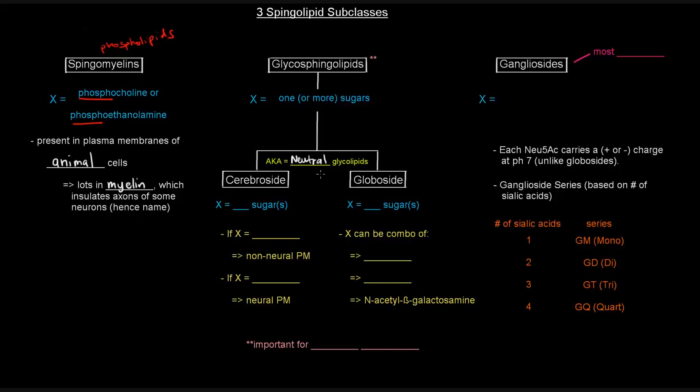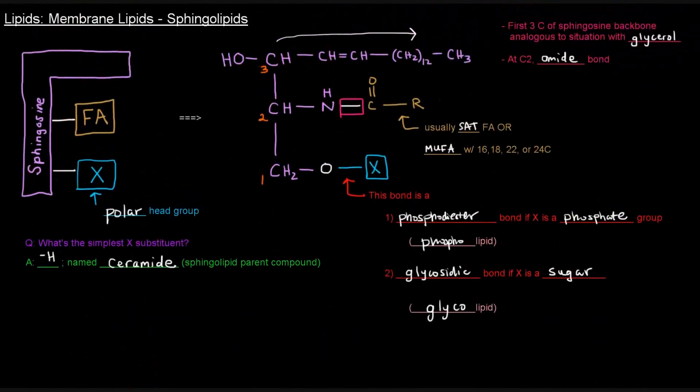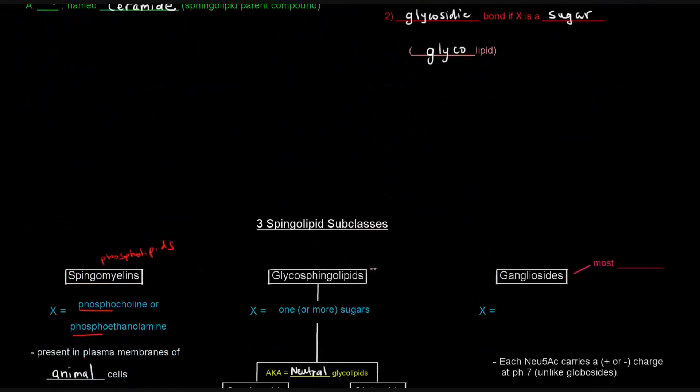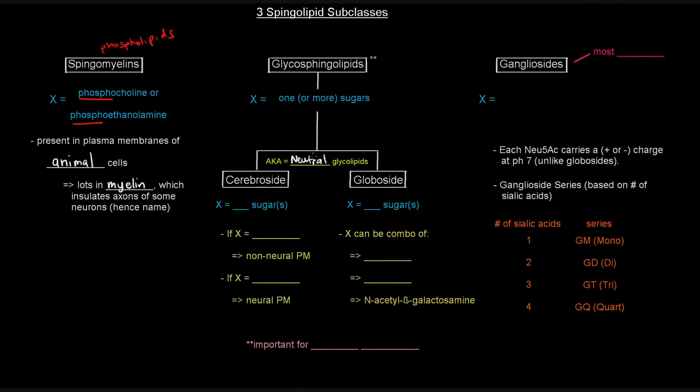They're called neutral glycolipids because when you attach a sugar as the polar portion, these sugars don't have charges. So, there's nowhere else in the sphingosine or in the fatty acid chain where there's a charge. So, if the sugar that you're adding doesn't have a charge, which sugars don't carry a charge, then you have a neutral molecule overall.